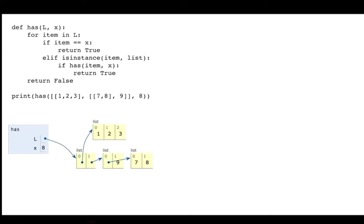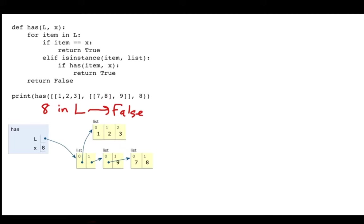If I used an operator like 'in' — something like '8 in list' where that list is basically this structure — that would actually be false. The reason is that list only contains two things: it contains this list and it contains this list, and neither of those things is 8. So the 'in' operator is not recursive — it can't figure out that 8 is buried somewhere in there. That's the purpose of this has() function.